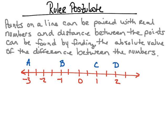In this video we'll be looking at a postulate called the ruler postulate. It says that points on a line can be paired with a real number, and the distance between the points can be found by finding the absolute value of the difference between these numbers. That might sound a little complicated, but let's break it down.